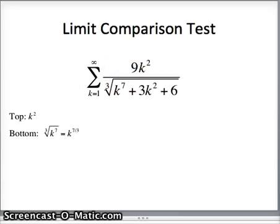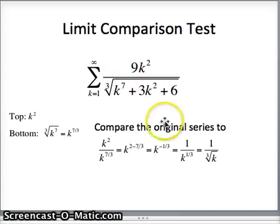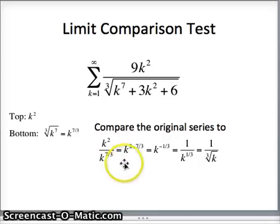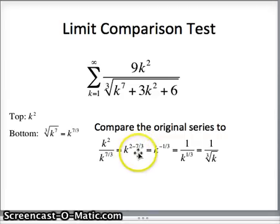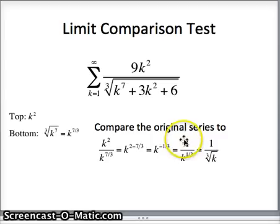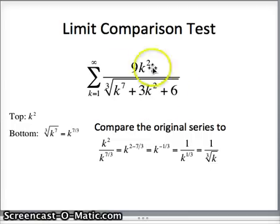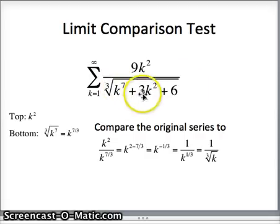To find b sub k, we simplify k² over k^(7/3) by subtracting exponents: k^(2 − 7/3) = k^(6/3 − 7/3) = k^(−1/3), which is 1/k^(1/3) or 1 over the cube root of k. So a sub k is 9k² over the cube root of (k⁷ + 3k² + 6), and b sub k is 1 over the cube root of k.